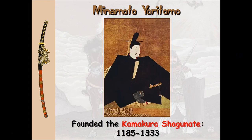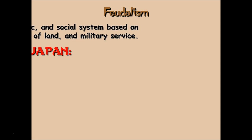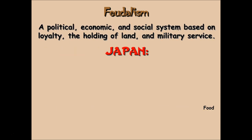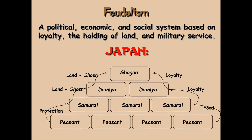Yorimoto founded the Kamakura Shogunate — a further move away from these Chinese roots. I want to reiterate a point: feudalism happened in Japan, just like it happened in Europe and in Russia — a very familiar pyramid. Instead of lords and vassals, we have daimyos. Instead of knights, we have samurai. But feudalism — this political, economic, and social system based upon loyalty, land, and military service — was the way people were doing business for many centuries all over the world.